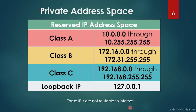There is one more thing — the private address space. We have private addresses for Classes A, B, and C. Private addresses are used whenever we make a local area network. In Class A, the private range is 10.0.0.0 through 10.255.255.255. In Class B, the private range is 172.16.0.0 through 172.31.255.255.